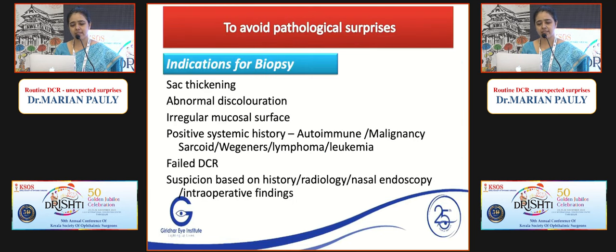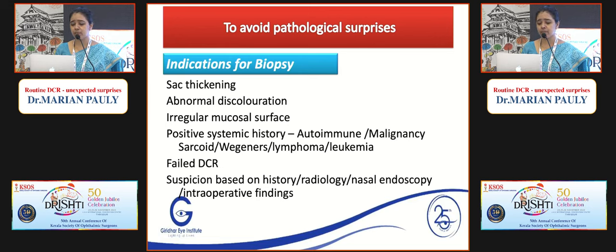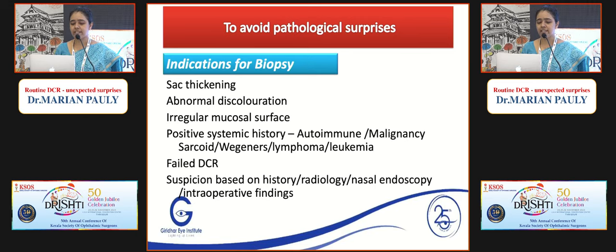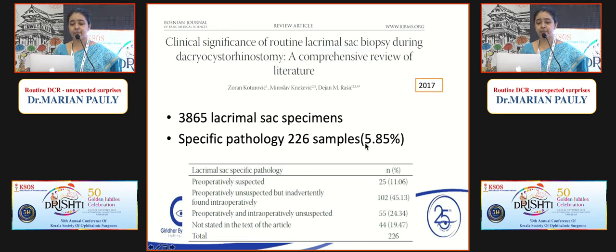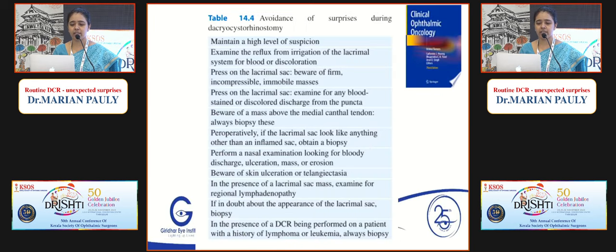To avoid pathological surprises, always do a biopsy when there is sac thickening, abnormal discoloration, irregular mucosal surface, or any systemic diseases such as autoimmune conditions, malacoplakia, sarcoid, Wegener's, lymphoma, or leukemia. Ask about these before taking the patient for DCR. Any failed DCR requires suspicion based on history, scans, nasal endoscopy, and intraoperative findings. In a study of 3,865 lacrimal sac specimens during routine DCR biopsy, specific pathology was found in 5% of cases - very important. Each line in Dr. Arunty Singh's pathology textbook on this is very important.